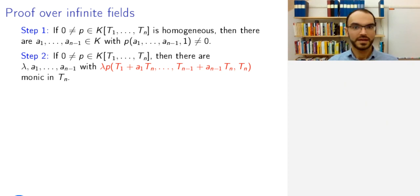The second step says that if I am given P different from zero, then there are lambda and a1 to an-1, such that this polynomial that I produce in this way is monic in Tn.